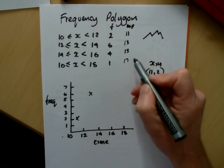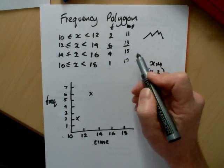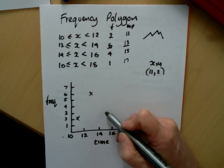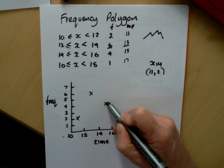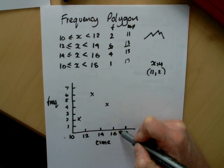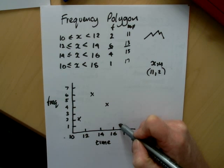Then 15, so that was the 13 with the 6. The 15 with the 4. And the midpoint 17 with the 1.